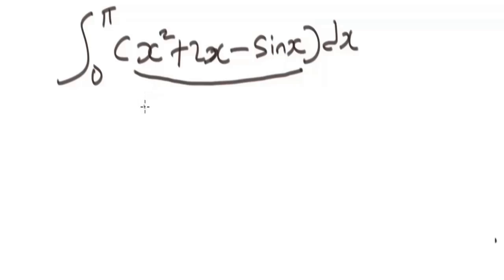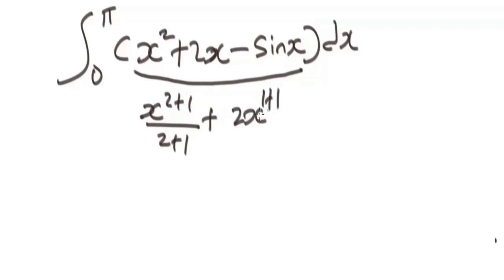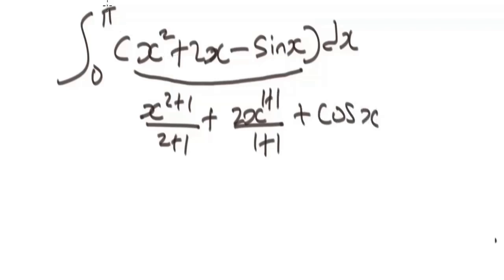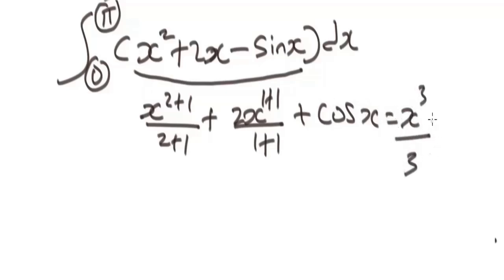The first thing you have to do is find the indefinite integral of these values. When you integrate x squared, you get x to the power of two plus one over two plus one. For the 2x term, the power of x is 1, so you get 2 times x to the power of one plus one over one plus one. When you integrate minus sine x, you get plus cos x. Simplifying, you get x to the power of three over three, plus 2x squared over two, plus cos x.